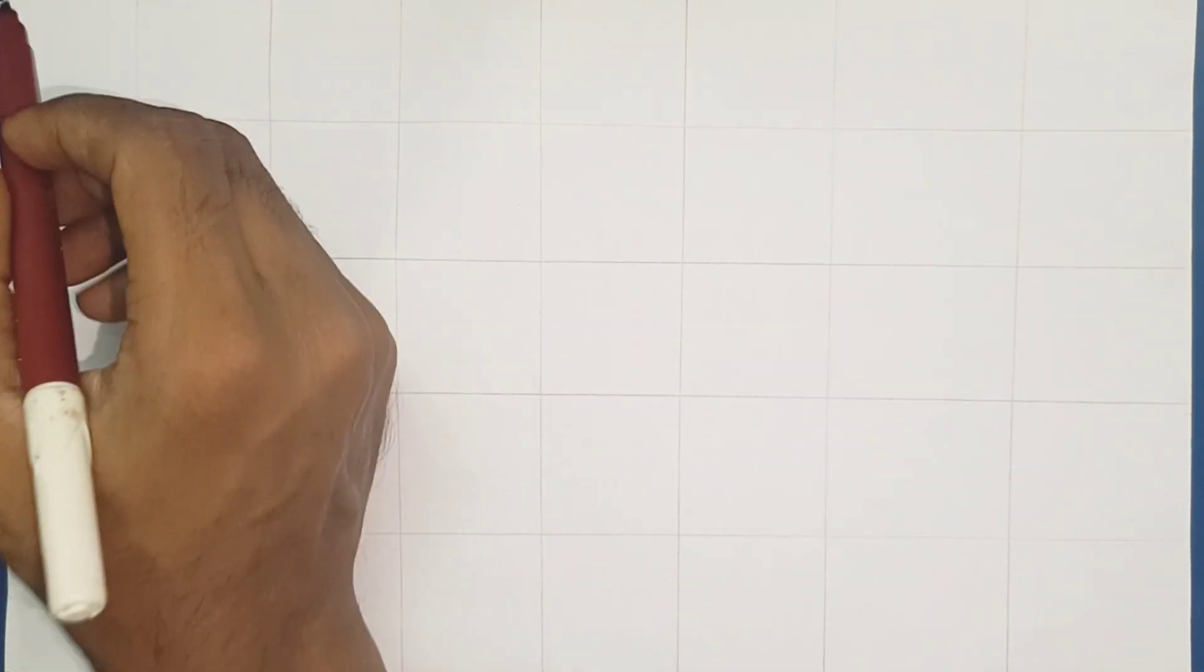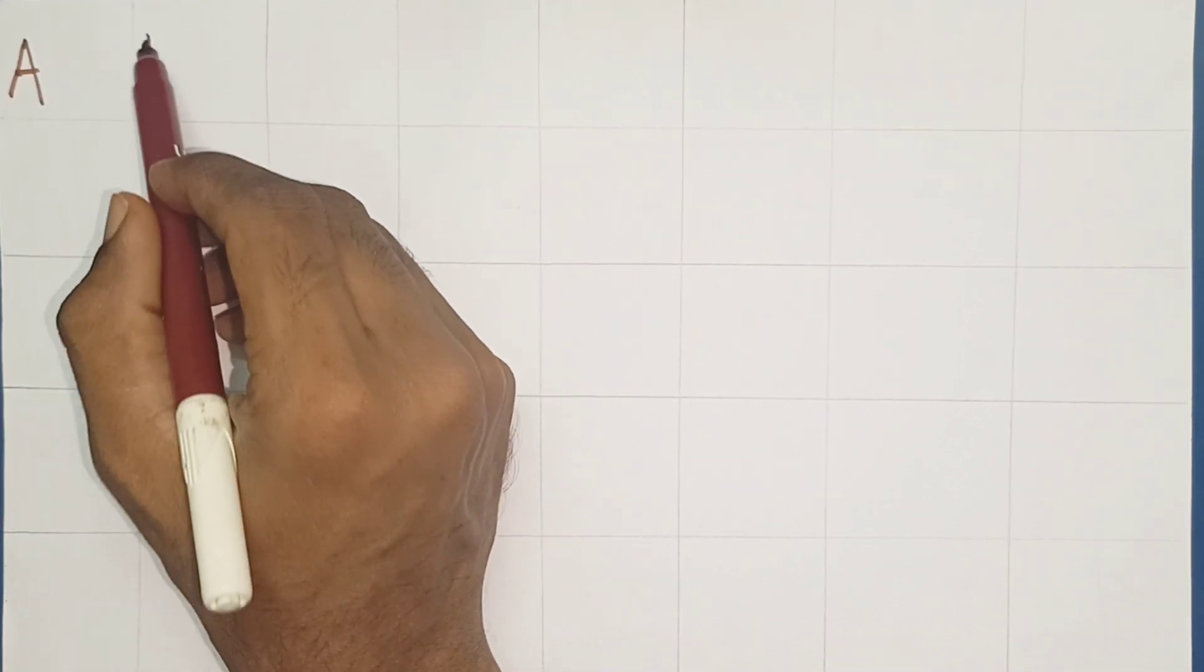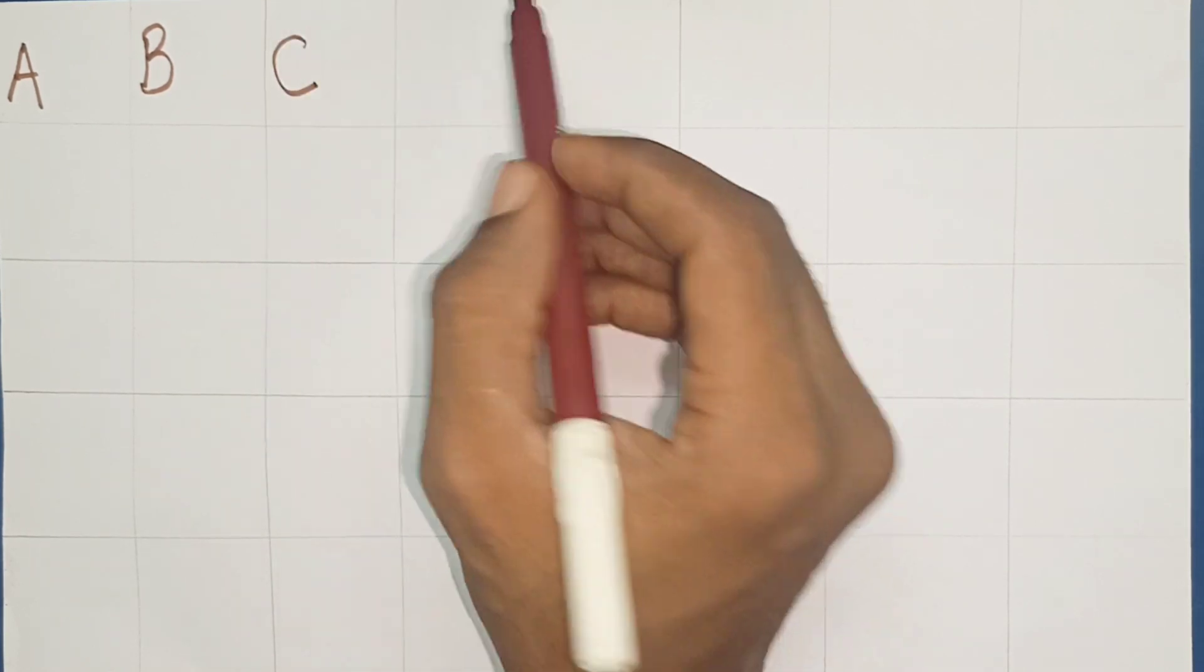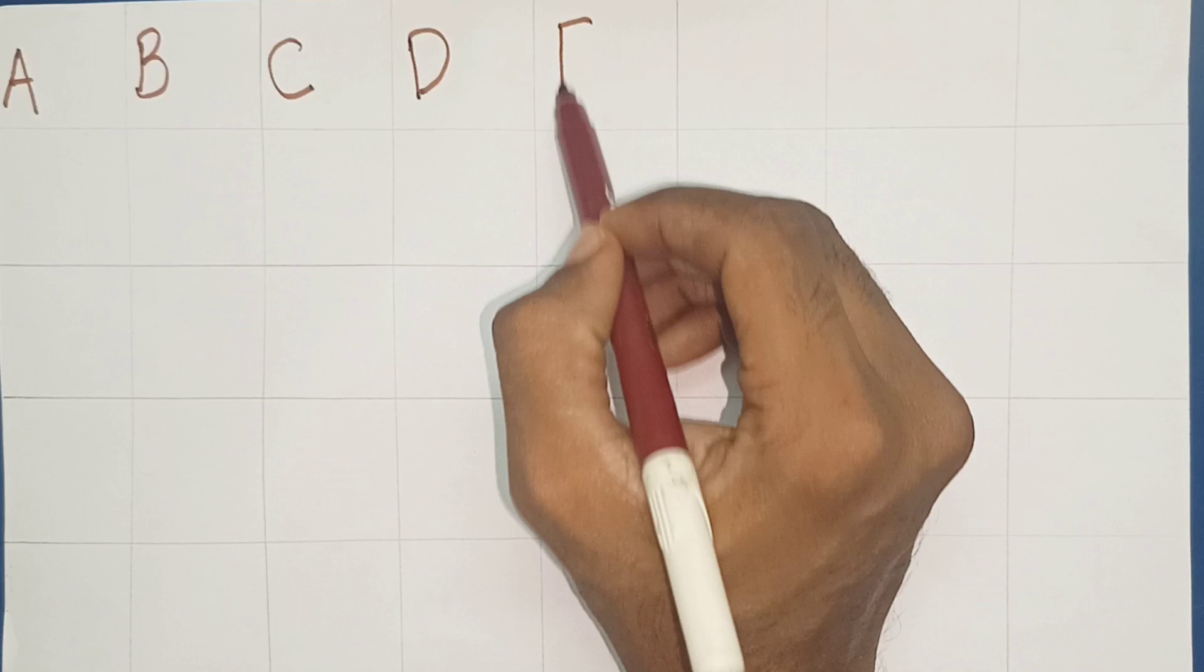Brown color. A. A for apple. B. B for ball. C. C for cat. D. D for dog.